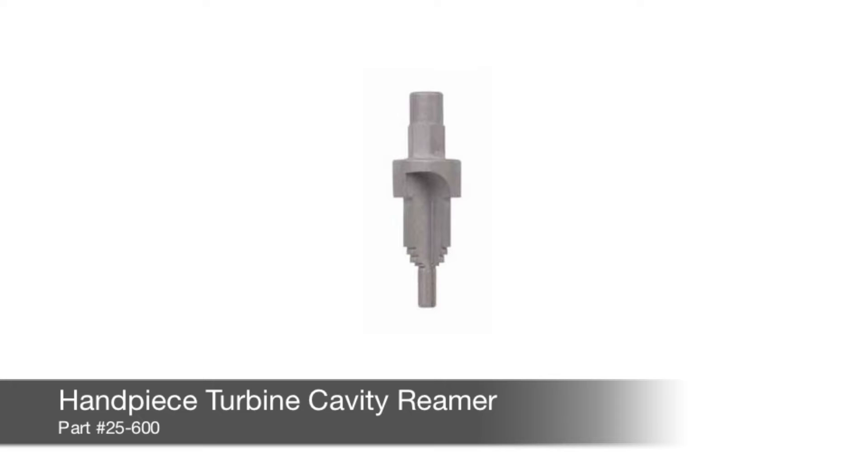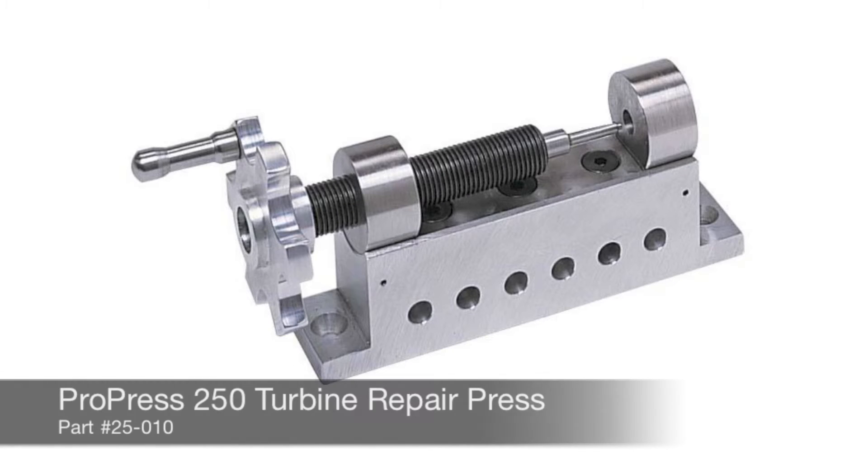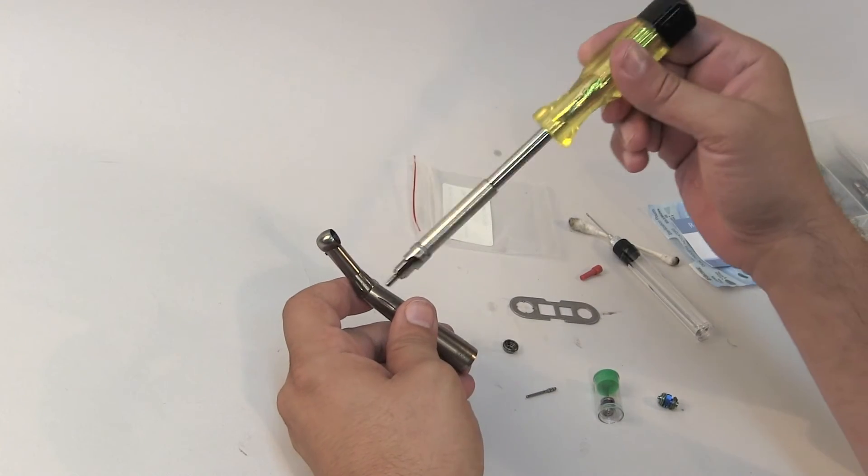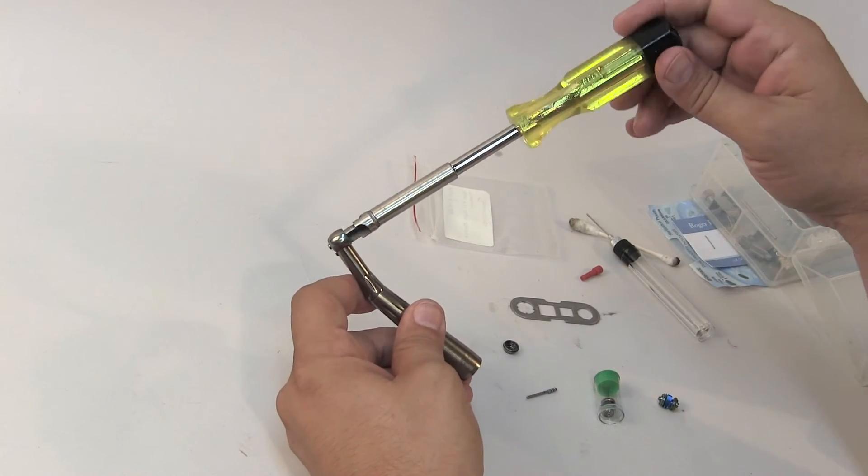This tool also works to remove stubborn debris from the turbine cavity and can be used with our ProPress 250 turbine press, a quarter inch socket wrench, or by hand tightening as can be seen here.